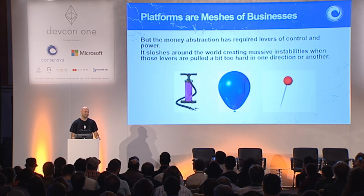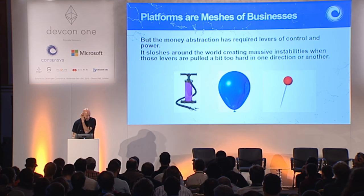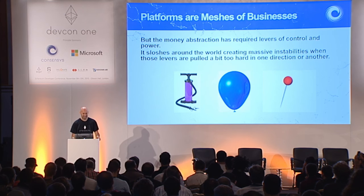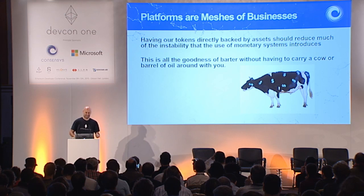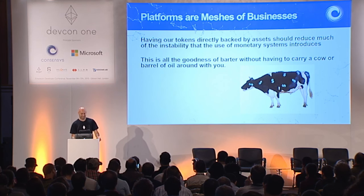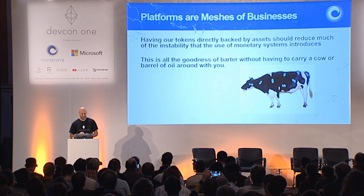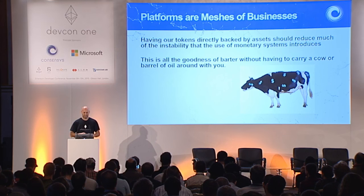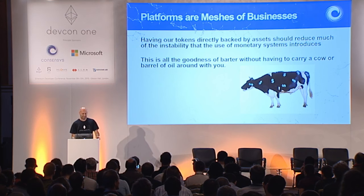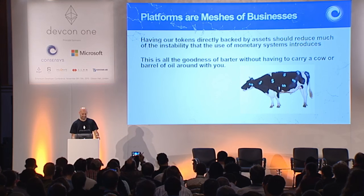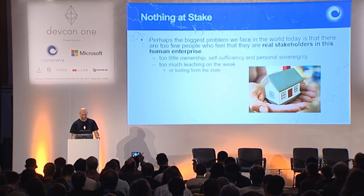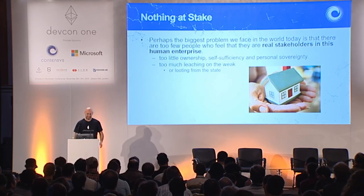Those levers cause money to slosh around the world, creating tremendous growth or tremendous dearth — essentially instabilities. It's a control system that tends to overshoot quite often. Having our tokens directly backed by assets or resources should reduce much of the instability that the use of money systems introduces. This gives you all the goodness of barter without having to carry a cow around with you.